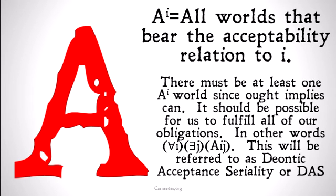There has to be at least one A^I world, since ought implies can, as Kant told us. If we can't fulfill all of our obligations, we have a problem. It should be possible for us to fulfill all our obligations, so there has to be at least one possible world where all of our obligations are, in fact, fulfilled. In other words, for all I, there exists some J such that J bears the acceptability relation to I. This will be referred to as the Deontic Acceptance Seriality, or D-A-S, if we use it in proofs.